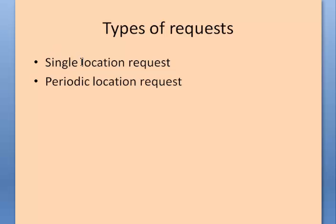In Android, there are two types of location requests. One is a single location request, the other is a periodic location request. With a single location request, when you initiate the request, a location update will come only once. With a periodic location request, the mobile will update the location periodically.